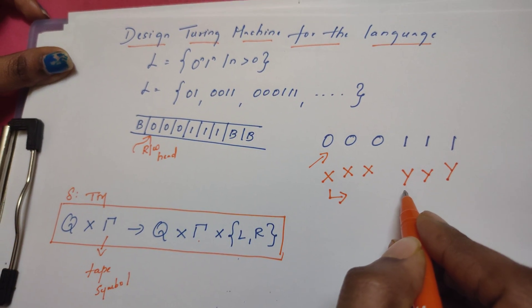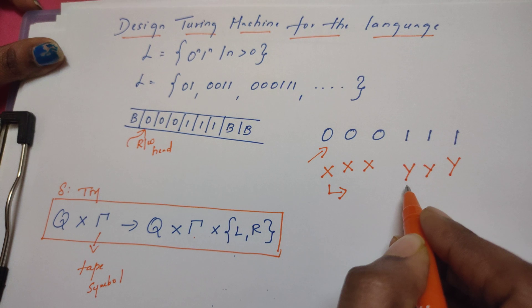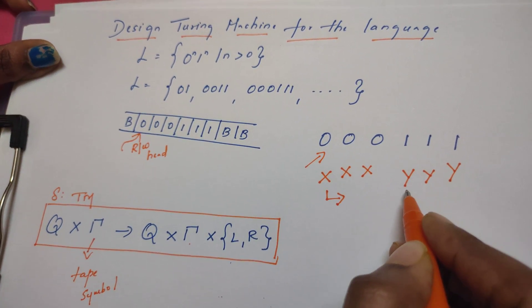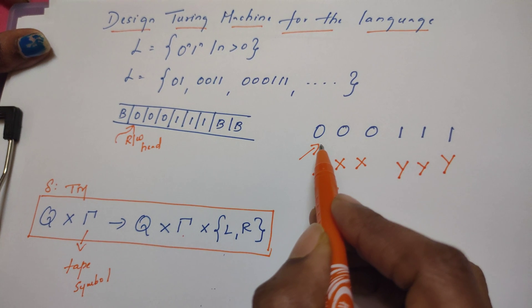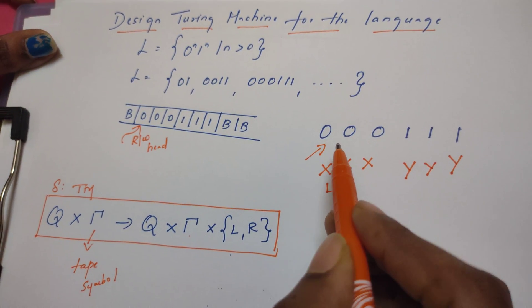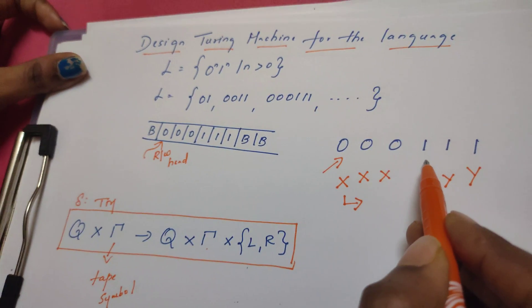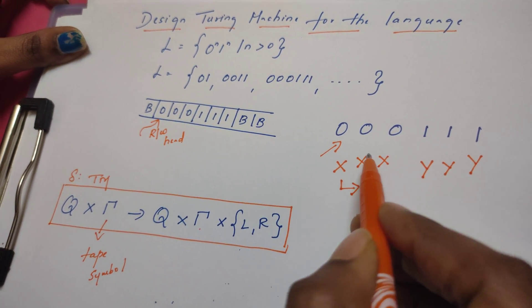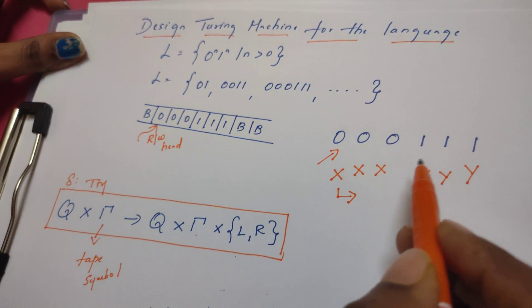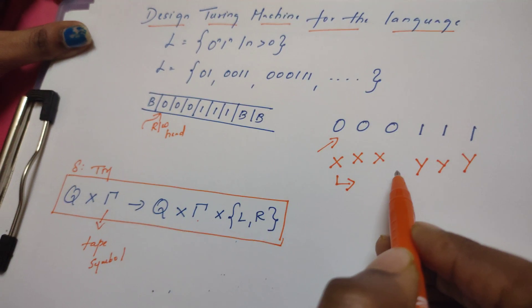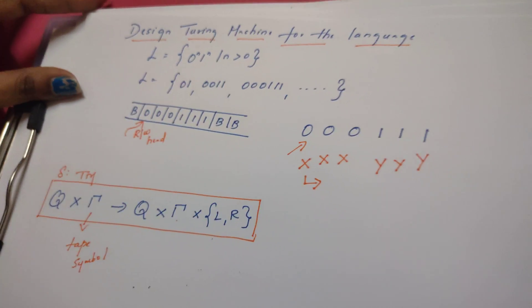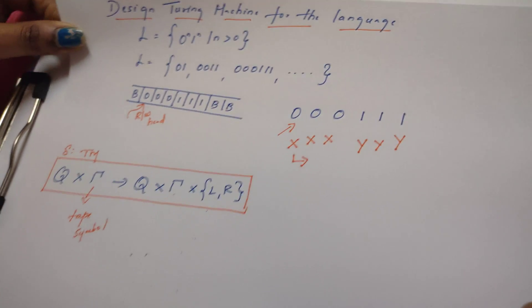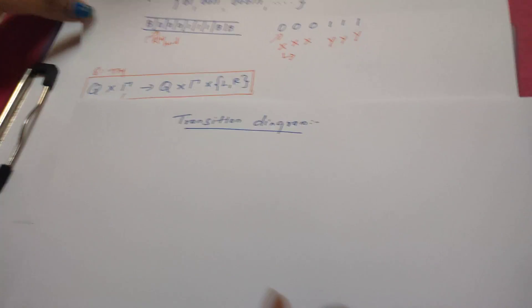Likewise, all the zeros are replaced by x and all the ones are replaced by y. The Turing machine alternately replaces every zero with x and every one with y, checking whether the count of zeros equals the count of ones. This is the core logic for designing this Turing machine.